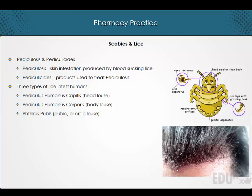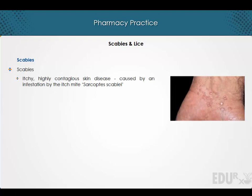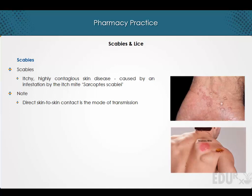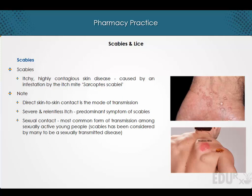Scabies is an itchy, highly contagious skin disease caused by an infestation by the itch mite sarcoptes scabiei. Direct skin-to-skin contact is the mode of transmission. A severe and relentless itch is the predominant symptom of scabies. Sexual contact is the most common form of transmission among sexually active young people.